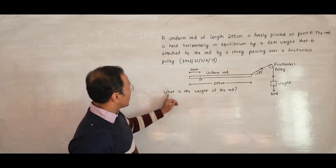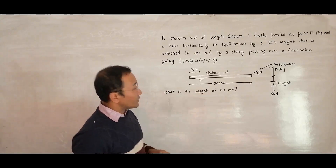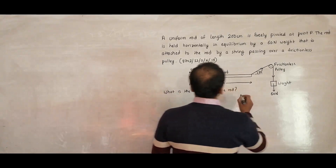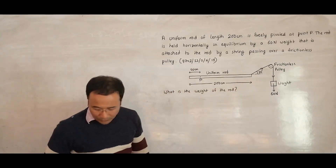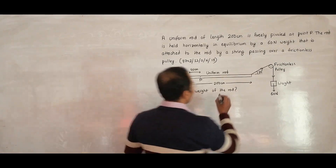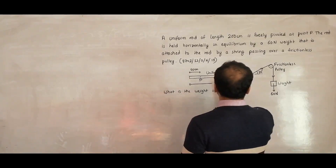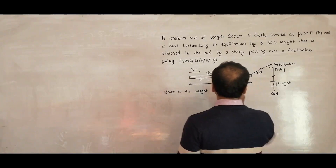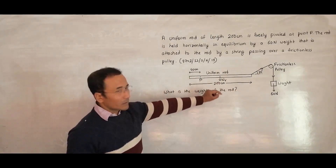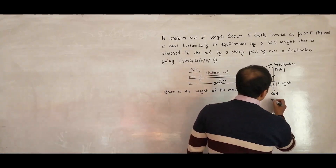Now, what we have to find is the weight of the rod. The weight of the rod will act at its center, since it is a uniform rod. So the weight W_R acts somewhere in the middle of the rod.